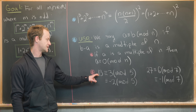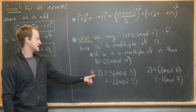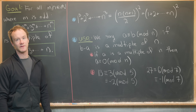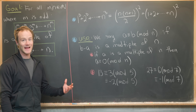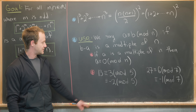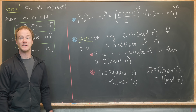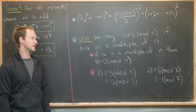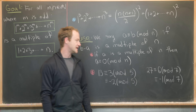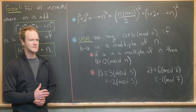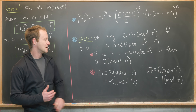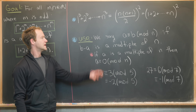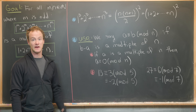Here are some examples. 13 is congruent to 3 mod 5 because 13 minus 3 is 10, a multiple of 5. It's also congruent to −2 mod 5 because 13 minus (−2) is 15, a multiple of 5. These are called residues, and sometimes we work with negative residues. Similarly, 27 is congruent to 6 mod 7 because 27 minus 6 is 21, and also congruent to −1 mod 7.